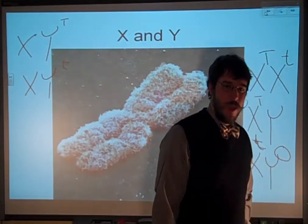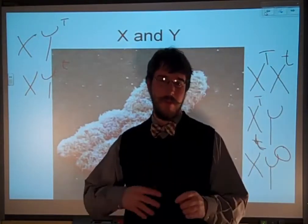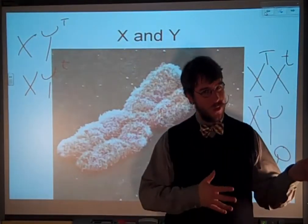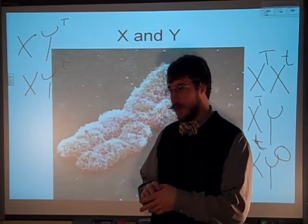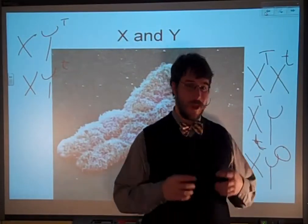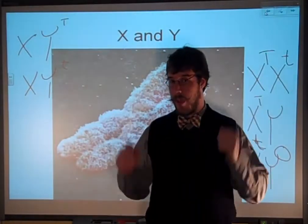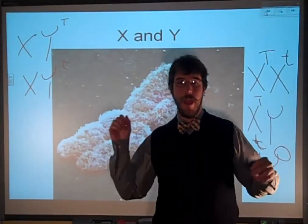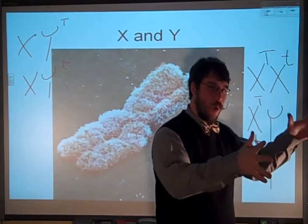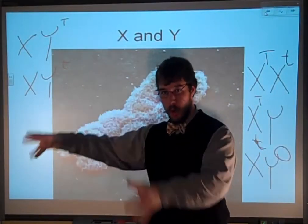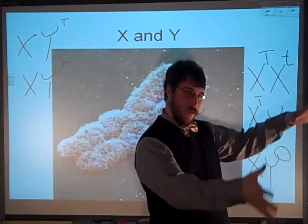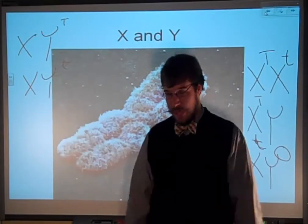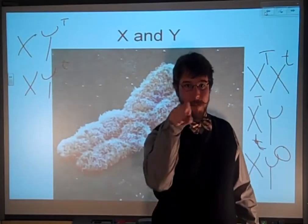When you're looking at these traits, you should be seeing something different depending on whether it's a boy or a girl. In the case of color blindness, which is X-linked, you need to distinguish: colorblind boy, colorblind girl, normal-seeing boy, normal-seeing girl. It matters.